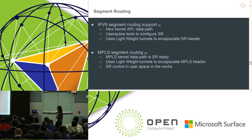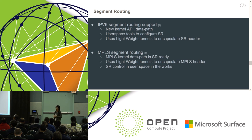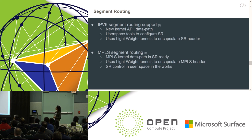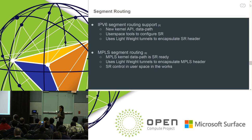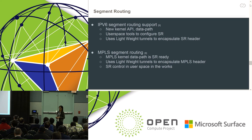Segment routing — there was a lot of activity on segment routing last year. The first implementation of IPv6 segment routing landed. User space tools were also updated to handle the security needed for IPv6 segment routing, including HMAC. This uses the lightweight tunnel infrastructure to create lightweight IPv6 segment routing tunnels. For MPLS segment routing, the kernel has had MPLS data plane support for some time; it's ready for segment routing and just needs a control plane. We are working on something with Quagga to make that happen.